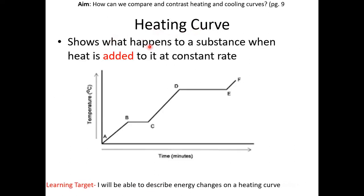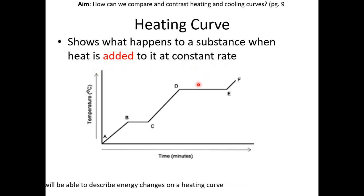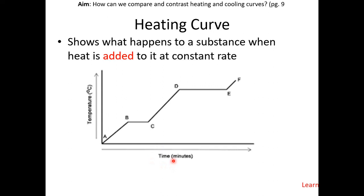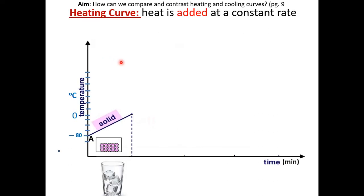A heating curve shows what happens to a substance when heat is added to it at a constant rate. Most heating curves will look something like this. We will analyze each line segment of a heating curve. In every heating curve, the y-axis is temperature and the x-axis can either be time or heat added. Even though heat is added at a constant rate, notice that in some lines the temperature is constant — we will discuss why that is.